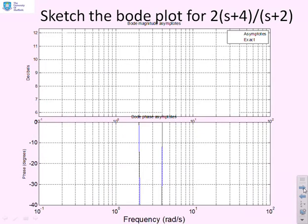So here's our sketch then. So first, let's mark the two corner frequencies. The corner frequencies were at 2 and 4. So that's these two lines here. And we said at low frequencies, you were at minus 12 decibels. Then you had 20 decibels per decade slope.